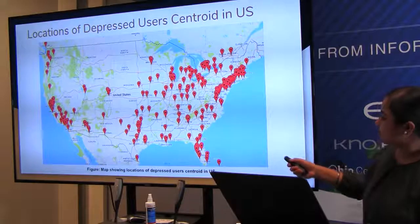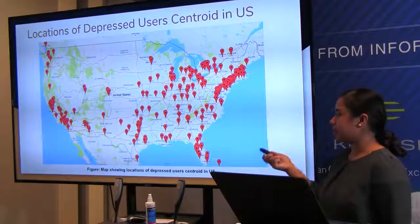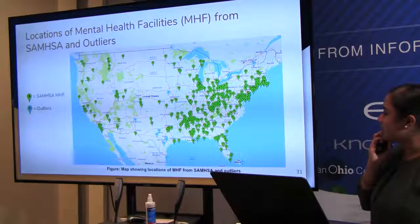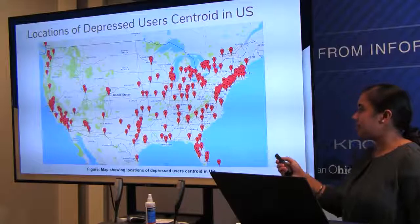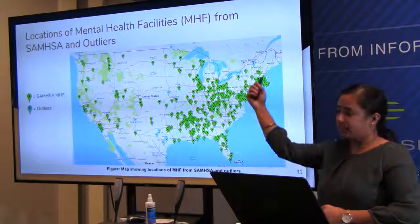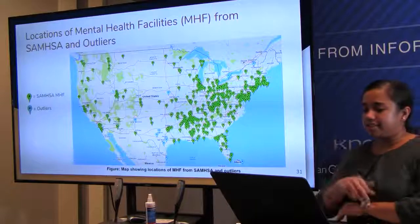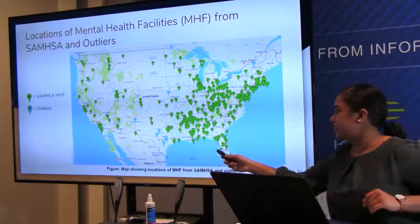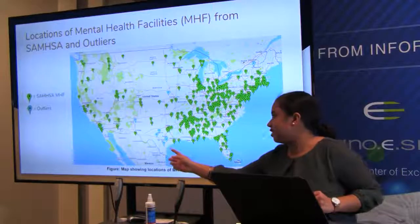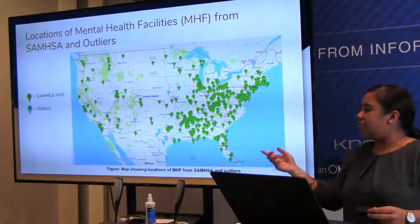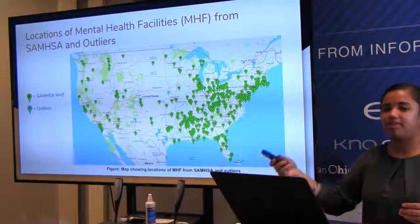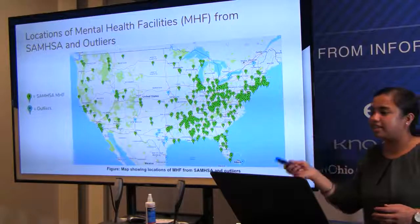Here are the centroids — the mental health facility locations recommended by the algorithm. Visually, the map looks similar to SAMHSA's. Comparing the maps: green markers are SAMHSA-reported facilities; red markers are the algorithm's predicted centroids. Density in the Northeast region matches between both maps. Teal markers on the overlaid map represent outlier centroids — areas where the algorithm found users but no corresponding SAMHSA facility exists nearby. These teal locations are where policy designers should be directed to allocate resources.